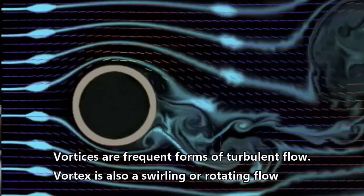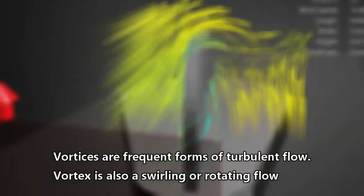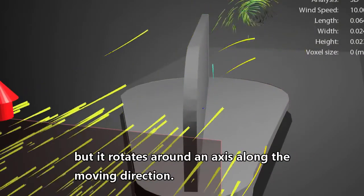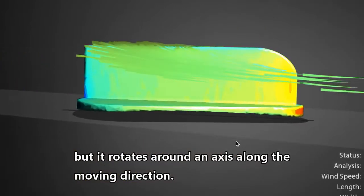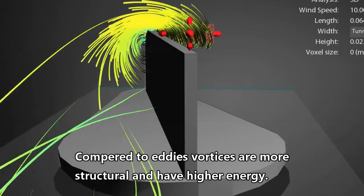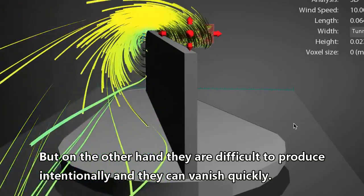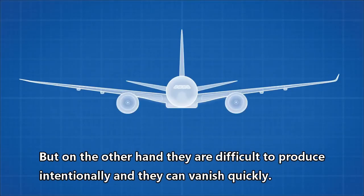Vortices are also frequent forms of turbulent flow. A vortex is also a swirling or rotating flow, but it rotates around an axis along the moving direction. Compared to eddies, vortices are more structural and have higher energy. But on the other hand, they are difficult to produce intentionally and they can vanish quickly.